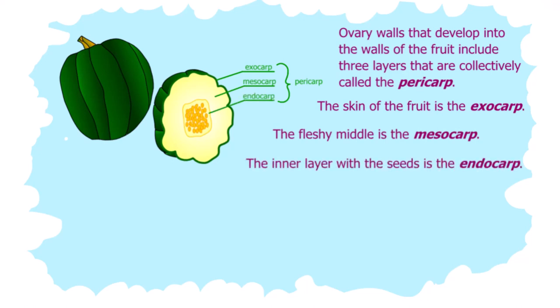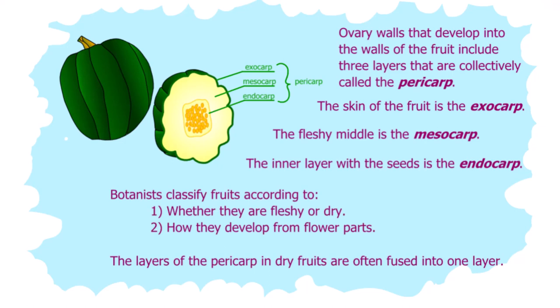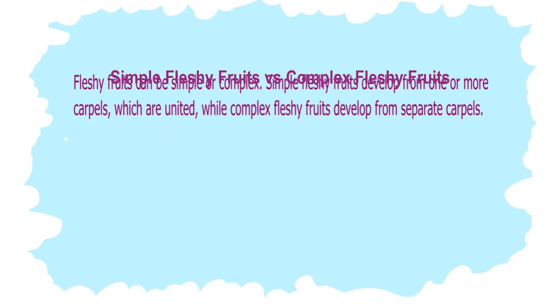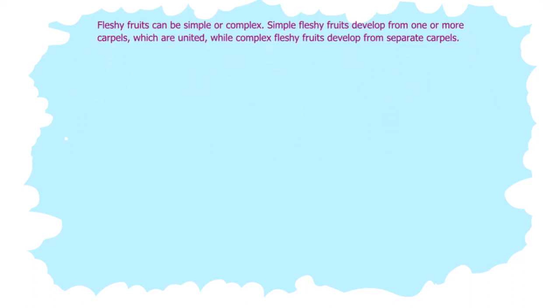Botanists classify fruit according to whether they are fleshy or dry, and how they develop from flower parts. The layers of the pericarp in dry fruit are often fused into one layer. Fleshy fruits can be simple or complex. Simple fleshy fruits develop from one or more carpels which are united, while complex fleshy fruits develop from separate carpels.